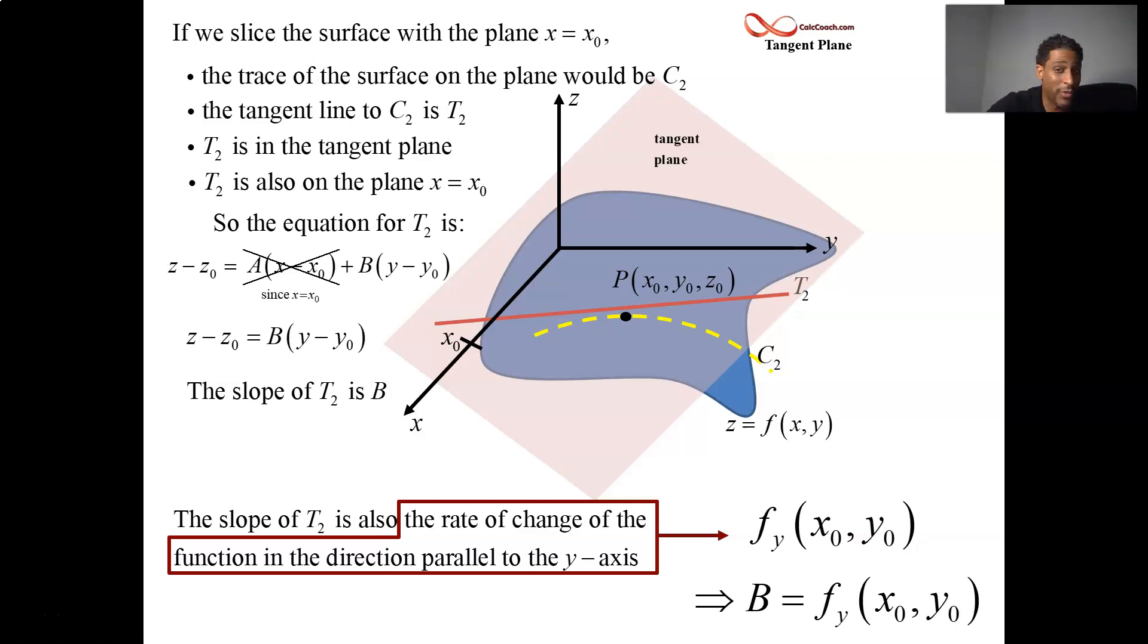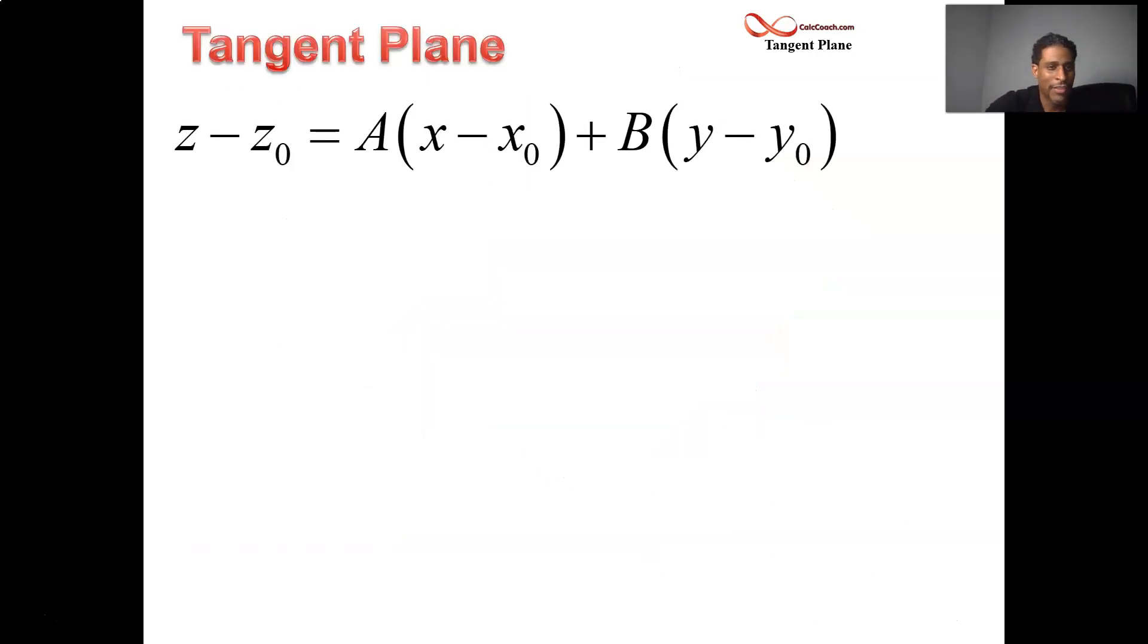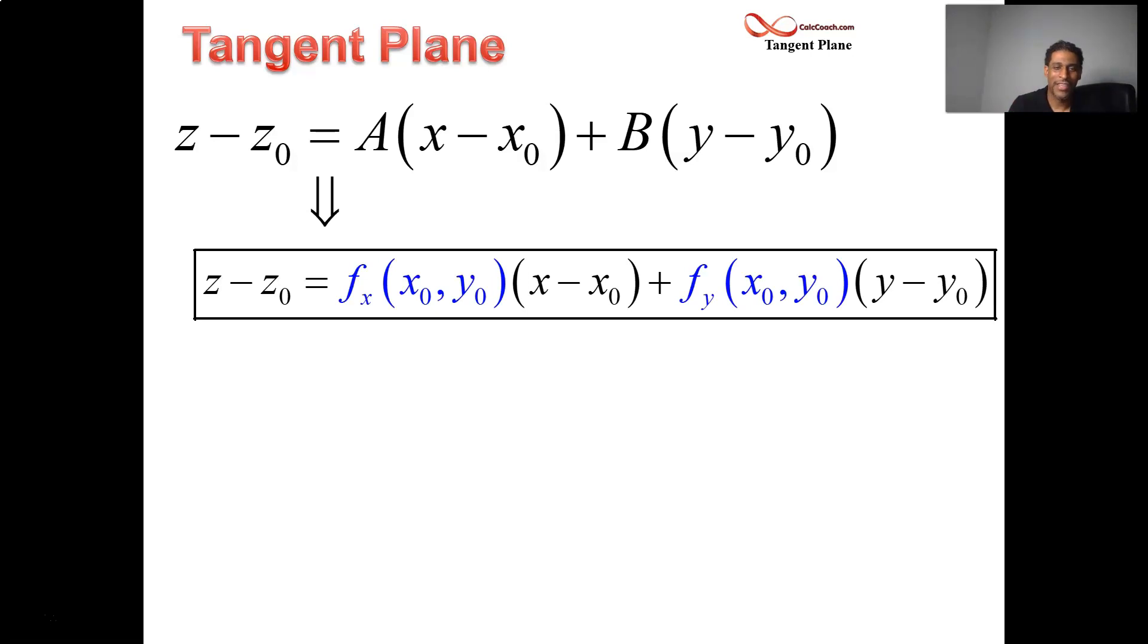So capital B is the partial with respect to y and capital A is the partial with respect to x. There's no need to mention the gradient, but those are the elements of the gradient if you wanted to. Here's our generic equation of any plane, but when it's a tangent plane, we know the values of A and B. We'll have A as f_x, the x-partial at (x₀, y₀), and B is the y-partial at (x₀, y₀). Now use this when you have an explicitly defined function, z equals a function of x and y. Now let's see this in action.